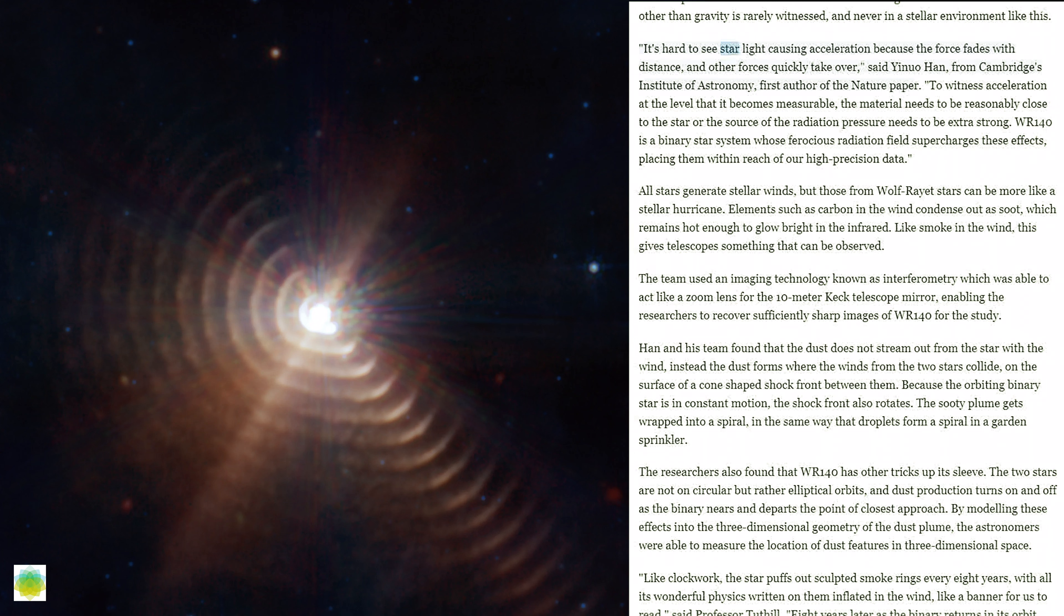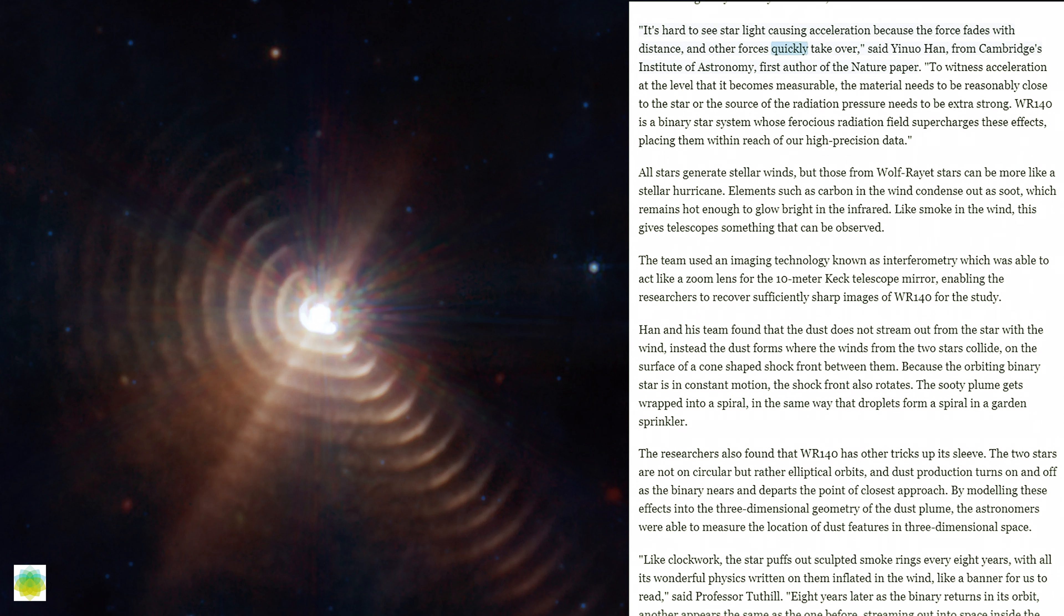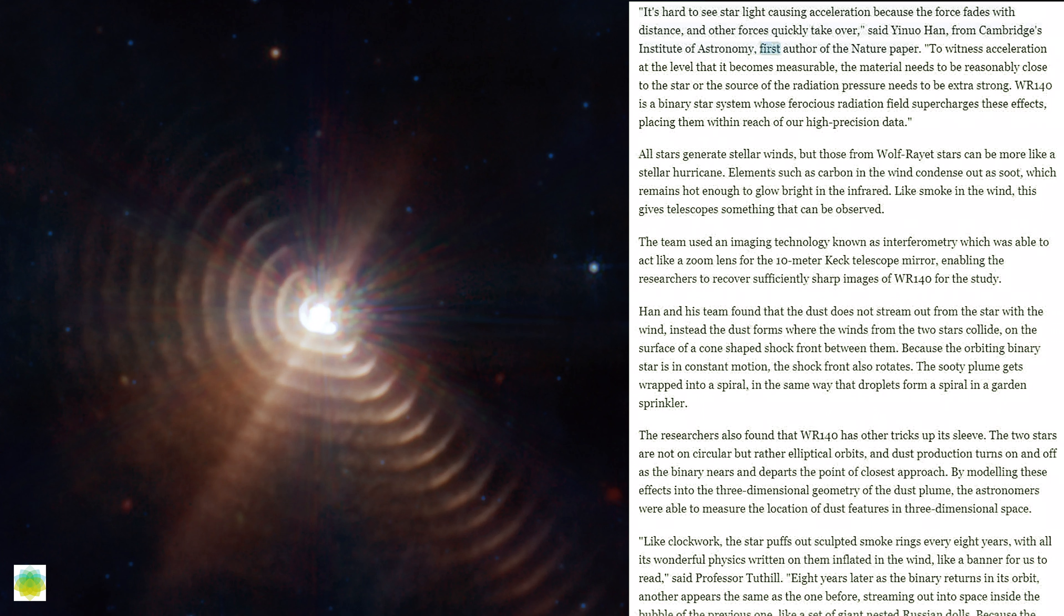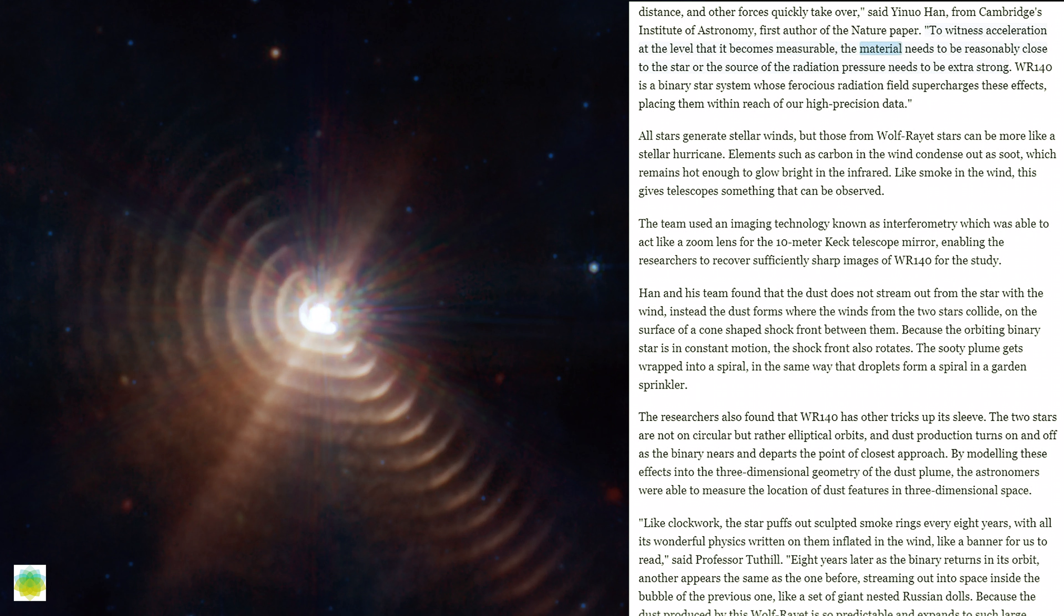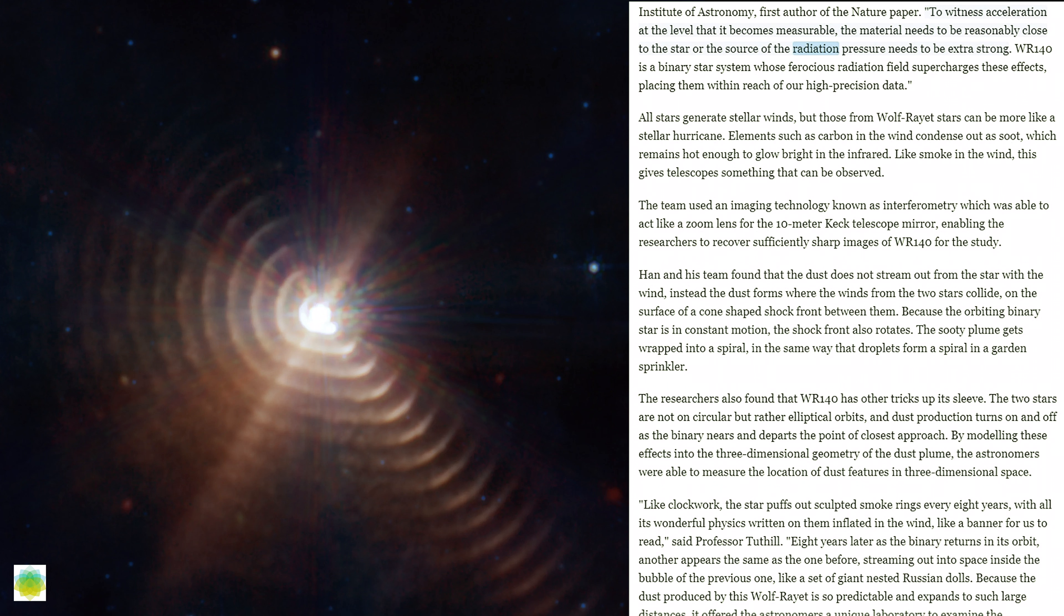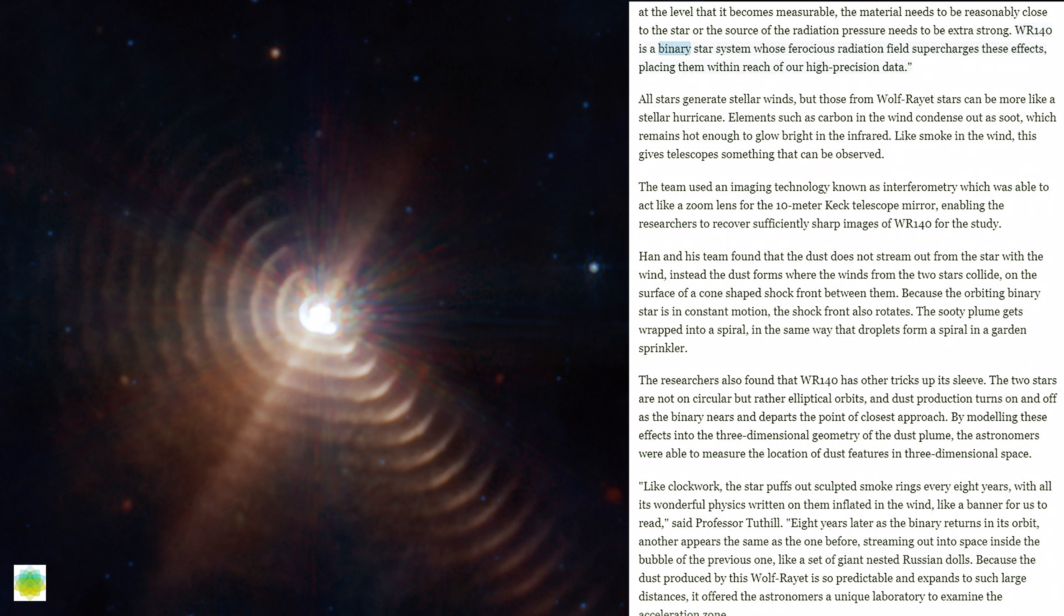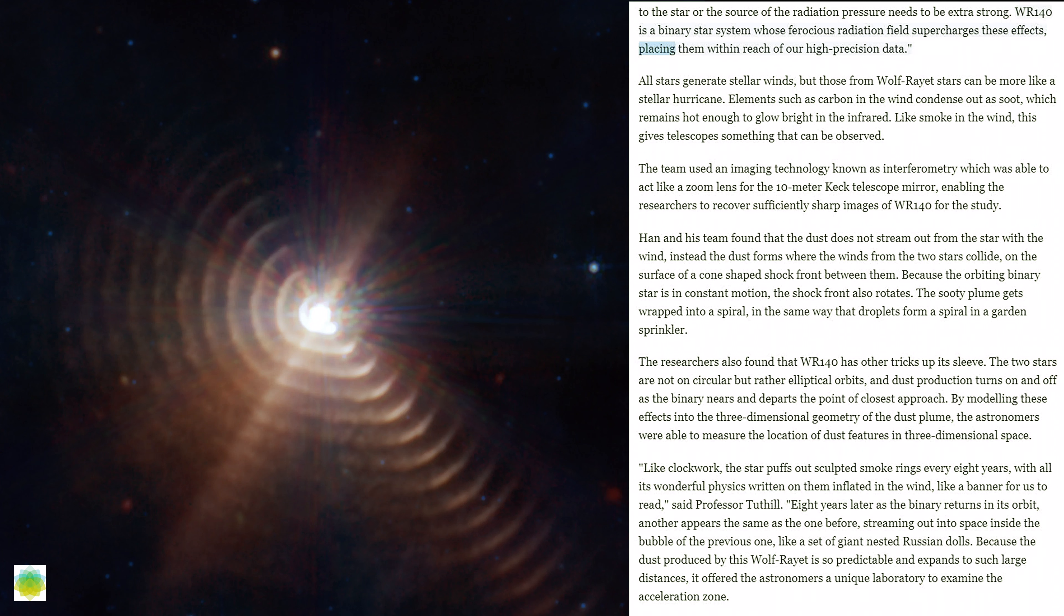It's hard to see starlight causing acceleration because the force fades with distance, and other forces quickly take over, said Yin-Wu Han from Cambridge's Institute of Astronomy, first author of the Nature paper. To witness acceleration at the level that it becomes measurable, the material needs to be reasonably close to the star or the source of the radiation pressure needs to be extra strong. WR-140 is a binary star system whose ferocious radiation field supercharges these effects, placing them within reach of our high-precision data.